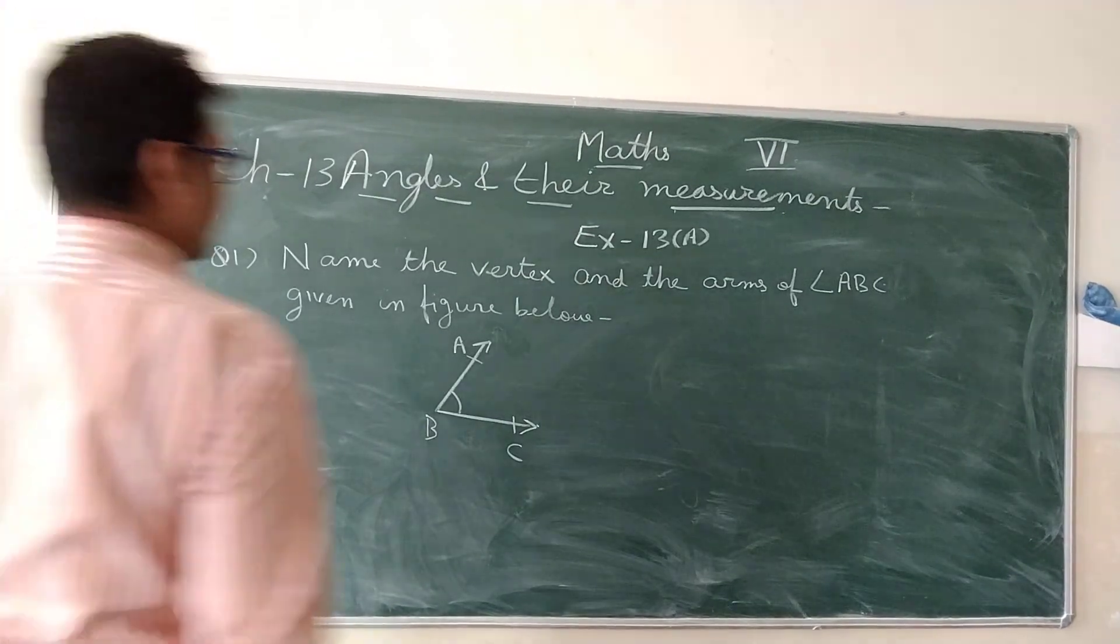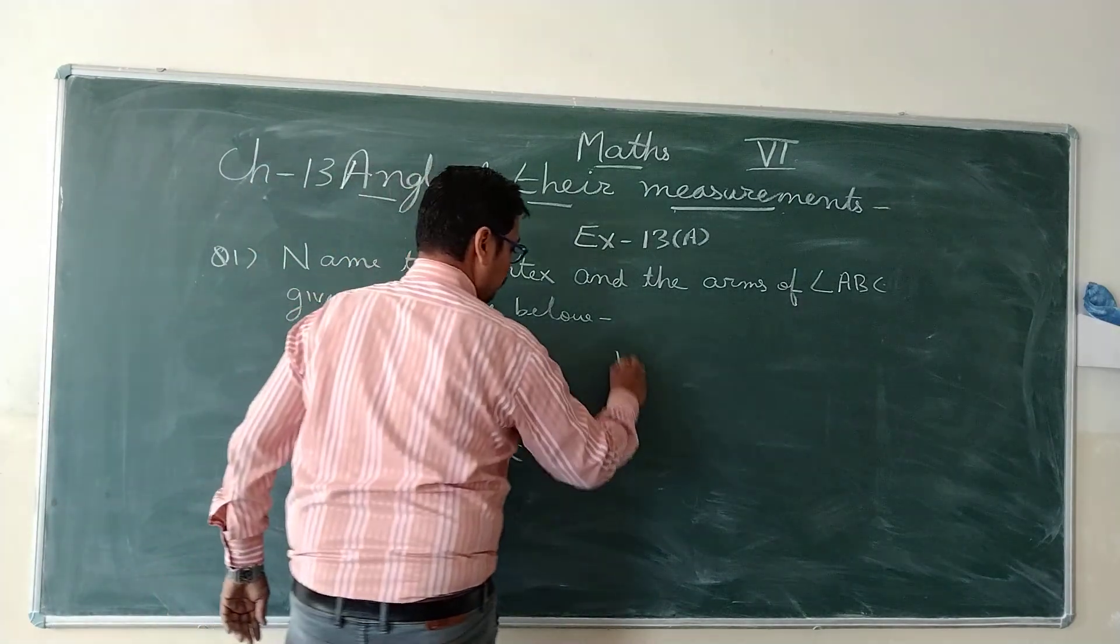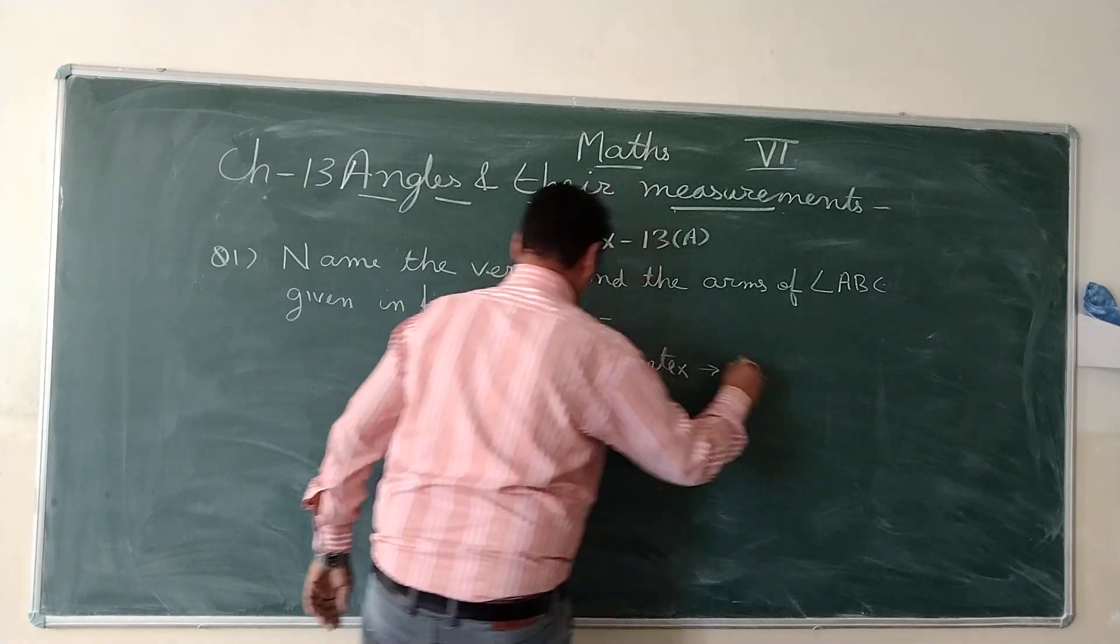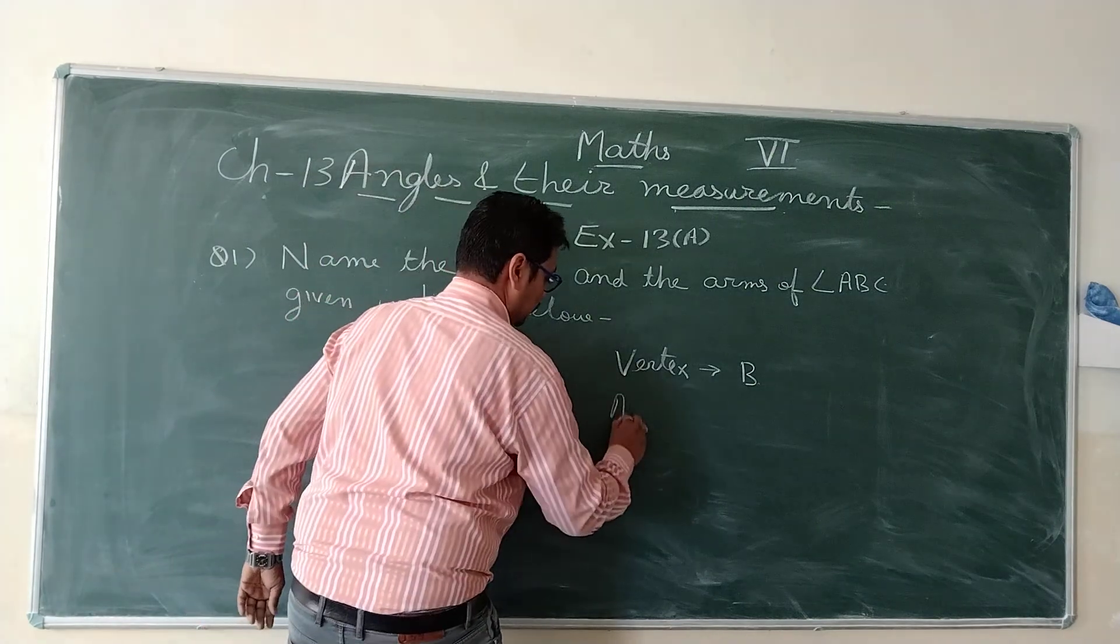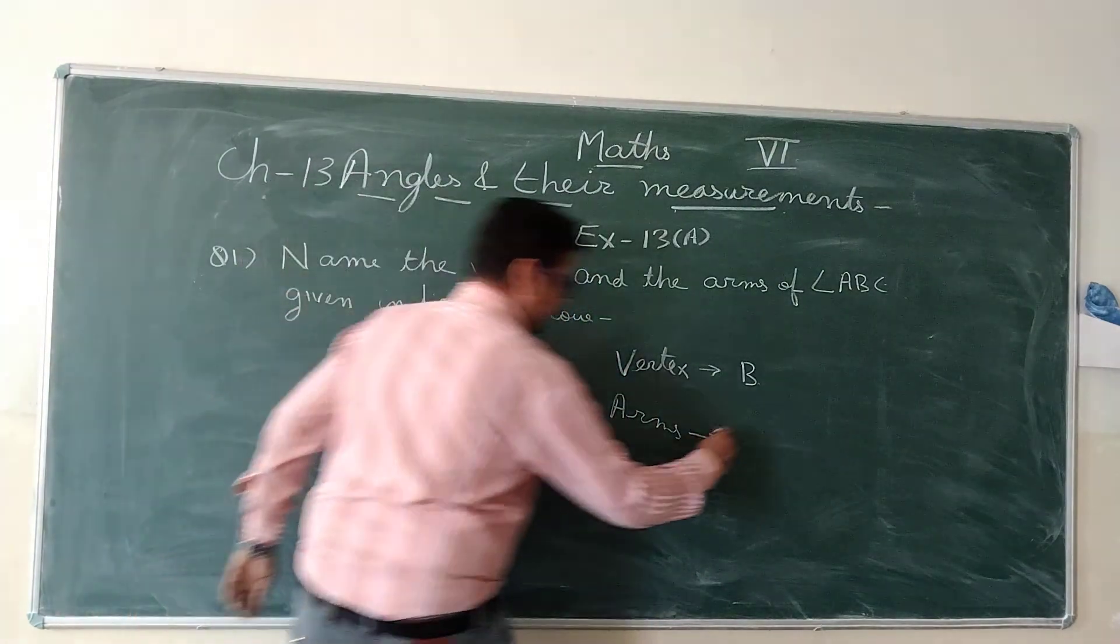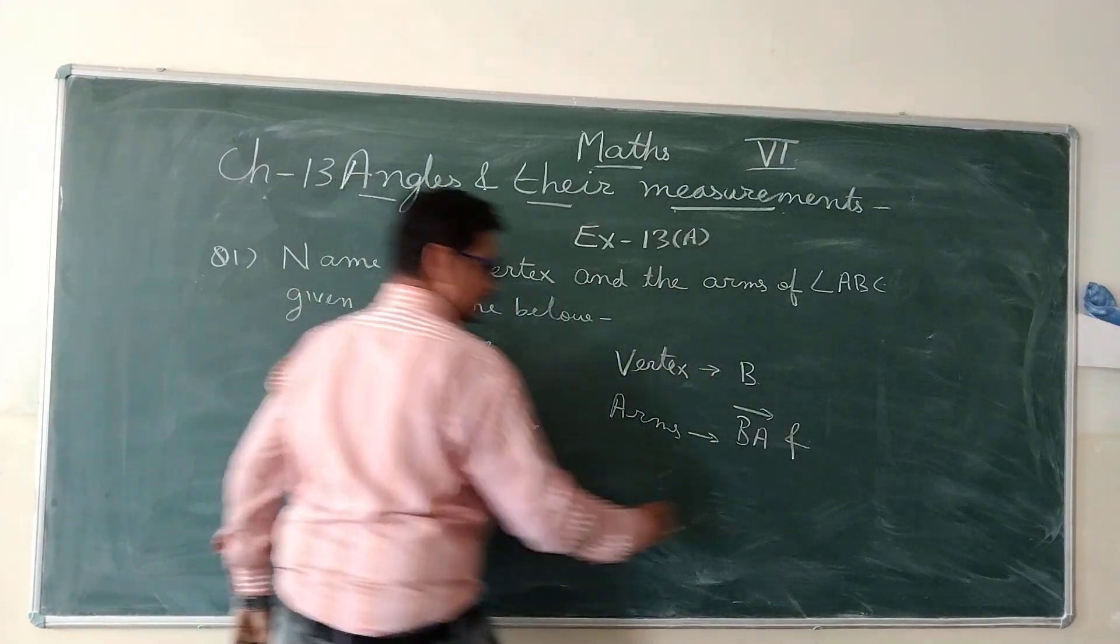Name the vertex and the arms of angle ABC. Here vertex is B. This point is a vertex and the arms are this one BA and BC.